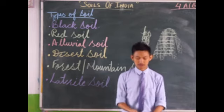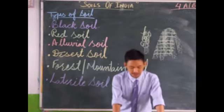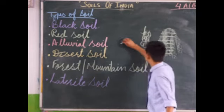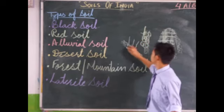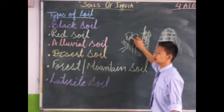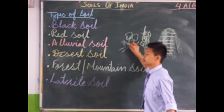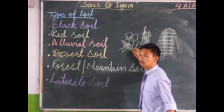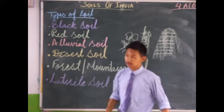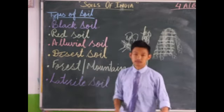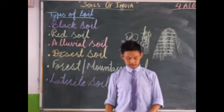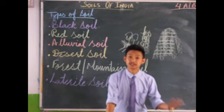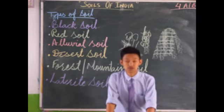Plants on the banks of rivers and wetlands are very important as their roots bind the soil and slow down the flow of water. If you plant trees on the bank of a river, the roots hold the soil and slow down the water flow, preventing soil erosion. The prevention of soil erosion is called soil conservation.